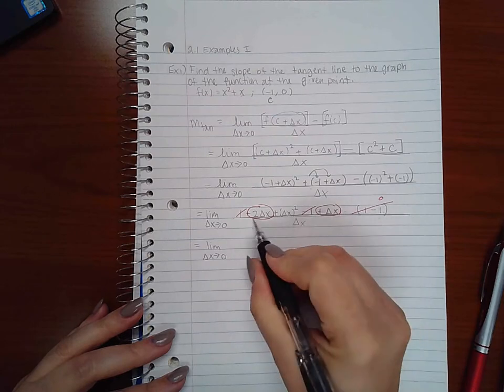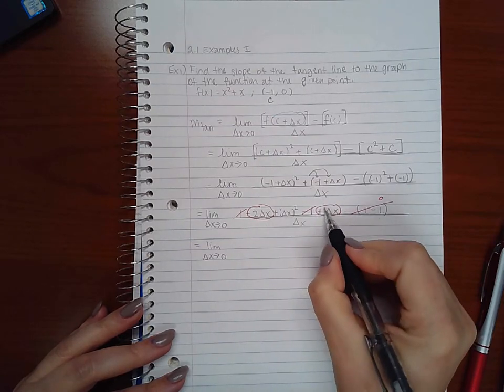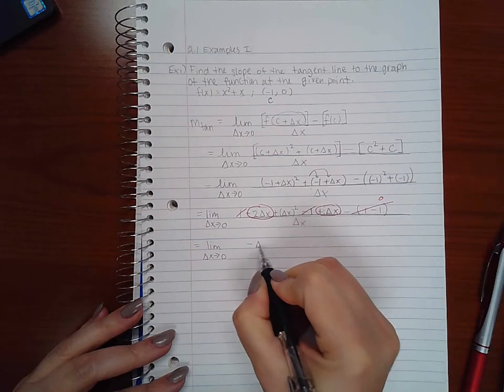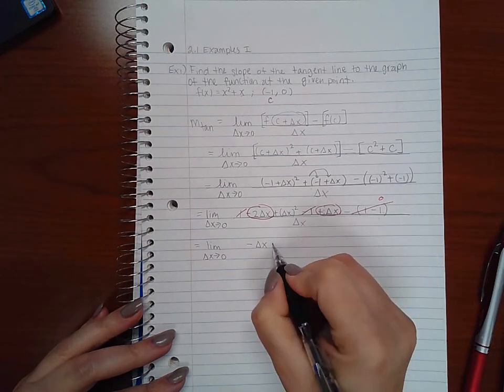We've got negative two delta x's plus one delta x will give me negative one delta x, or just negative delta x.